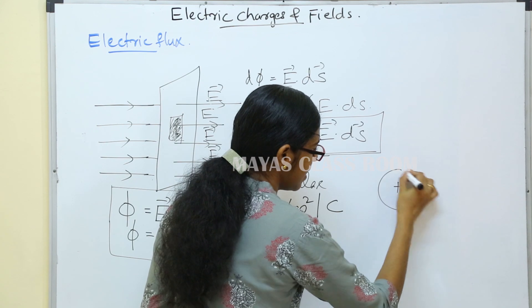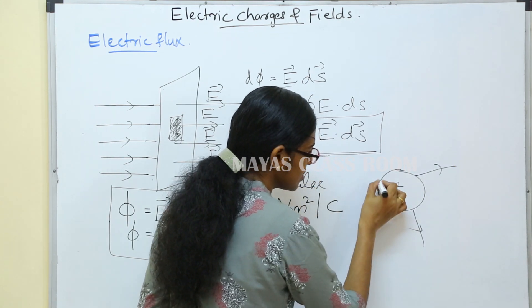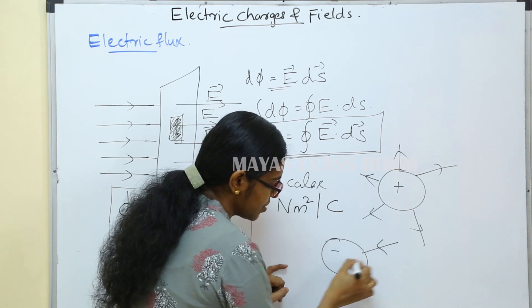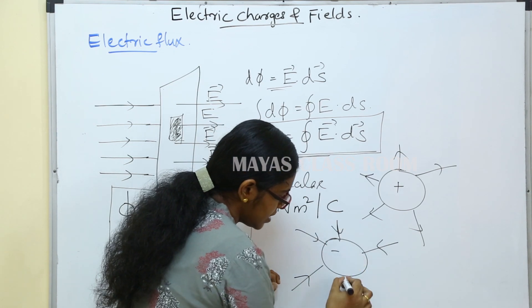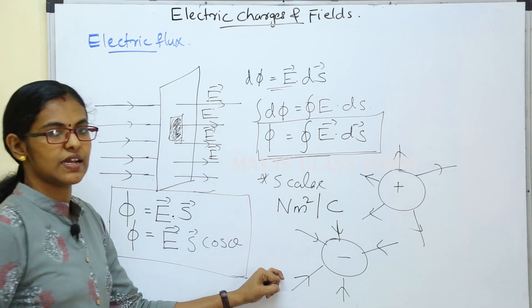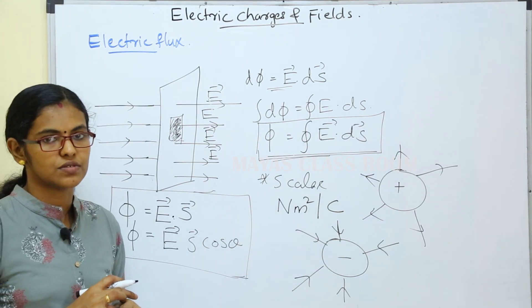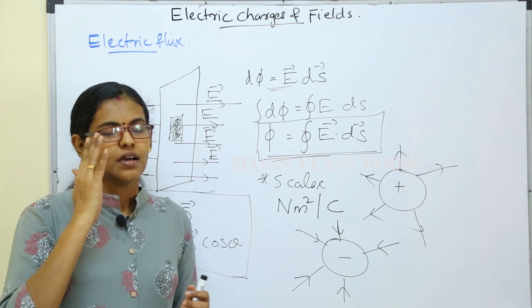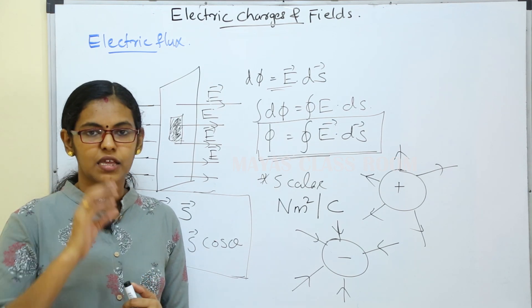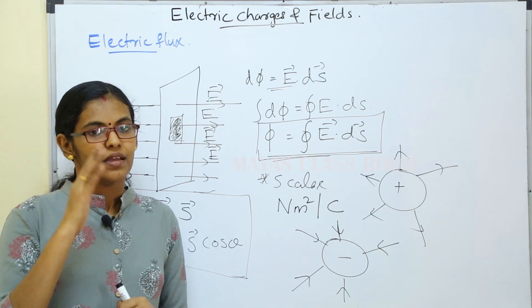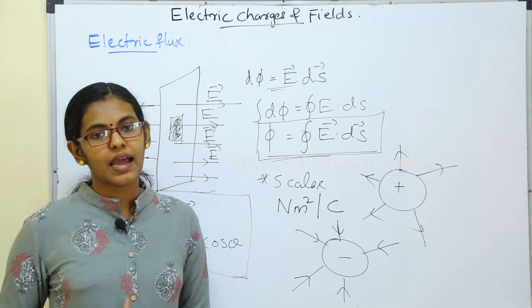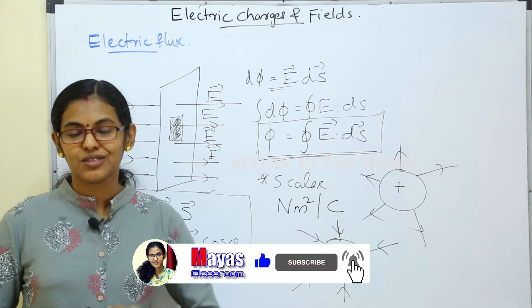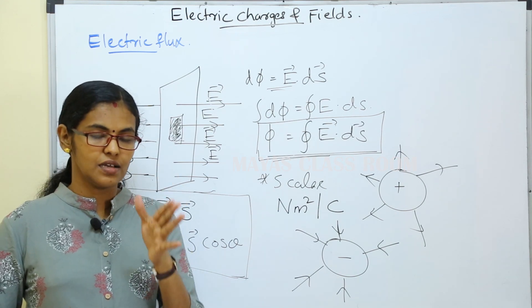We can also consider negative electric flux as well as positive electric flux. If the surface is perpendicular to the electric field lines, the electric flux is maximum. If the surface is parallel to the field lines, the flux is minimum.